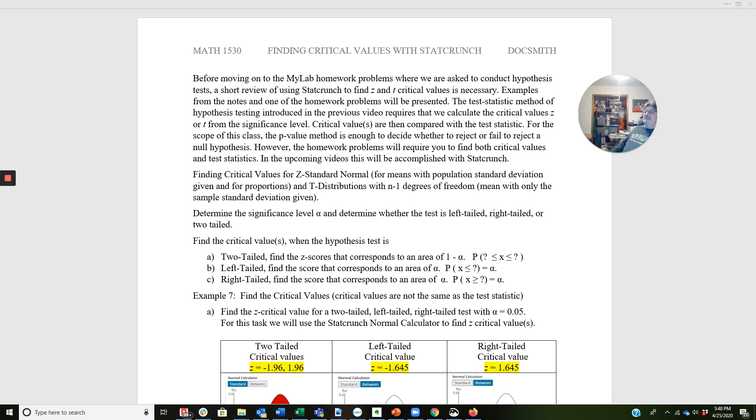The test statistic method of hypothesis testing introduced in the previous video requires that we calculate critical values Z or T from the significance level. Critical values are then compared with the test statistic. For the scope of this class, the p-value method is enough to decide whether to reject or fail to reject the null hypothesis. However, the homework problems will require you to find both critical values and test statistics. In the upcoming videos, this will be accomplished with StatCrunch.